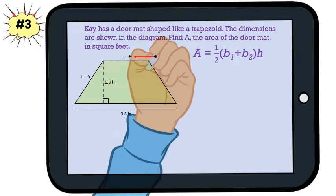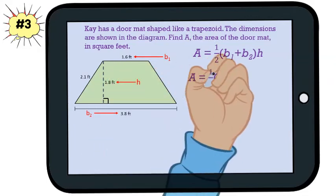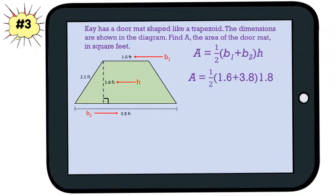Then we need to identify the parts in the diagram. Remember, the bases are the parallel sides and the height is measured at a 90 degree angle. Next, we need to substitute our numbers into the equation. Following the order of operations, we add the two numbers inside the parentheses first.